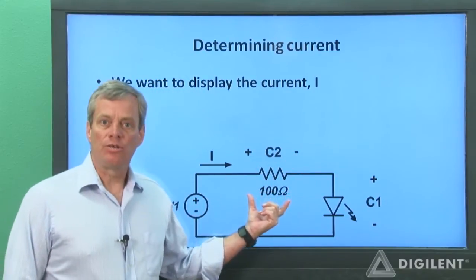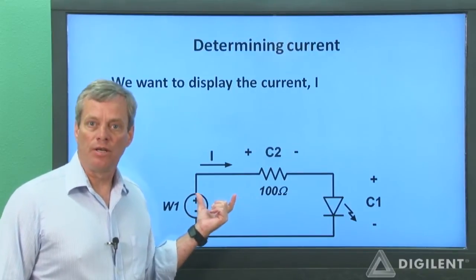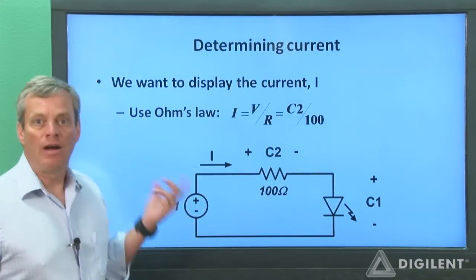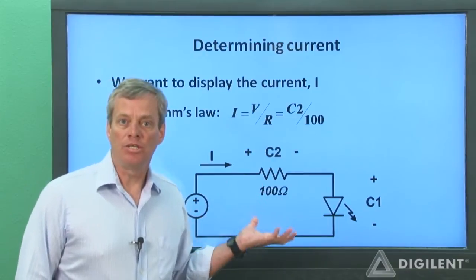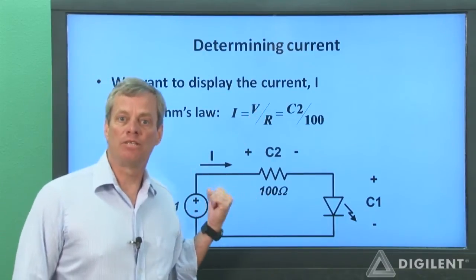The resistor limits the current, but it also provides us with a way to calculate the current through the circuit. Ohm's Law provides us with the necessary information to calculate the current through a resistor if we know the voltage difference and the resistance value.